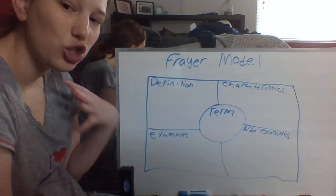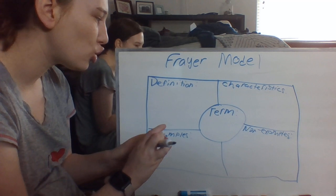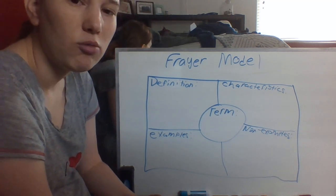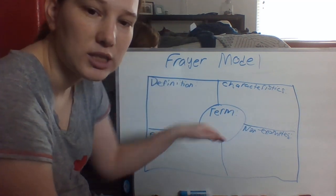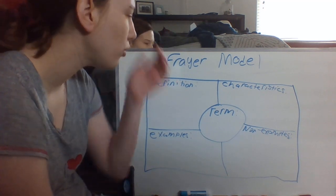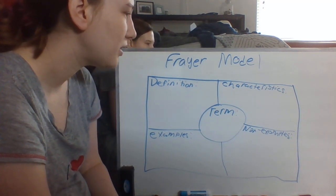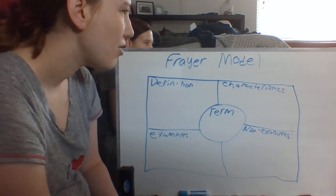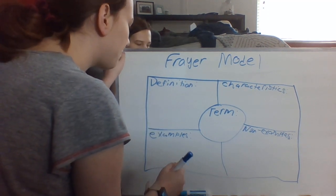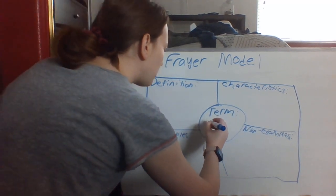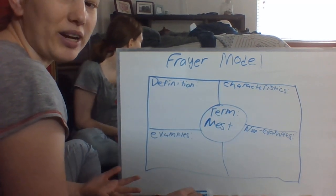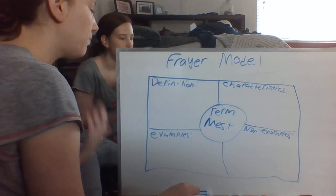Now let me show you what the students should be doing. First, students need to find a term in the book they're reading that they don't understand, are struggling with, or maybe already know and want to review. I'm going to use the term 'nest' as my example. So the student writes down 'nest' as their vocabulary term.